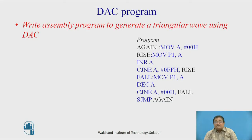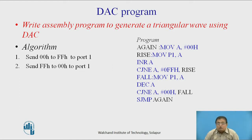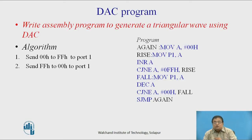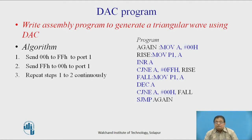Now write an assembly program to generate a triangular wave using the DAC. To generate the triangular wave, send 00 to FF to Port 1 — first 00, then 01, then 02, going up to FF — to get the rising edge. Then send FF down to 00 to get the falling edge of the triangular wave. Repeat steps 1 and 2 continuously to get a continuous triangular wave.